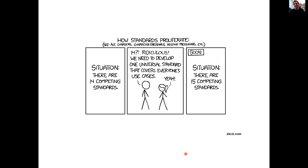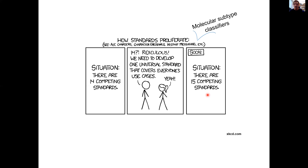This reminds me of the classic XKCD comic about competing standards — we were all in that situation when Paco started, with many competing classifiers and everyone thinking we needed one universal standard. And then we ended up with just one more system on top. Still, the consensus project is important because it forces everyone to include the consensus classification in their work, creating a common reference while each group can also use their own specialized systems.